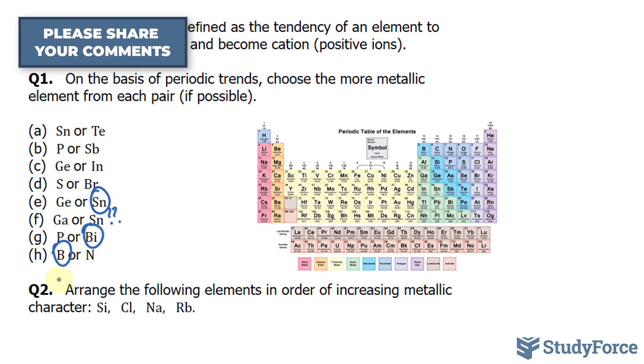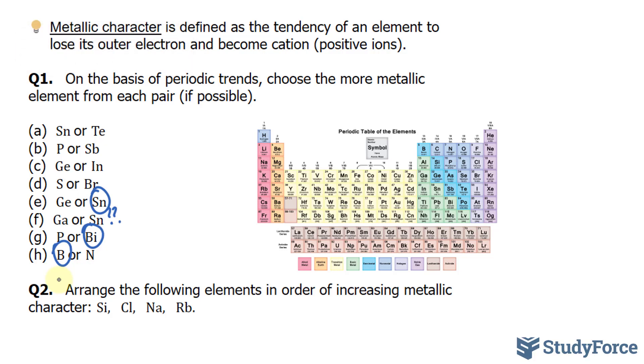In question number two, they ask: arrange the following elements in order of increasing metallic character. So from least metallic to most metallic.